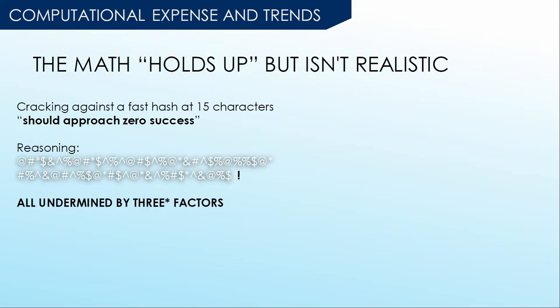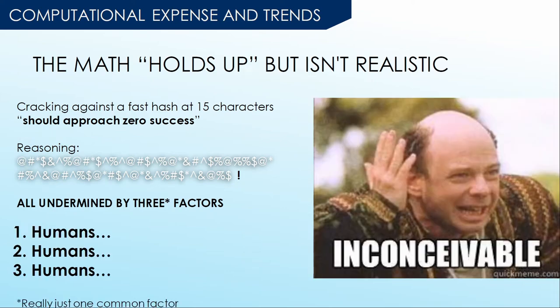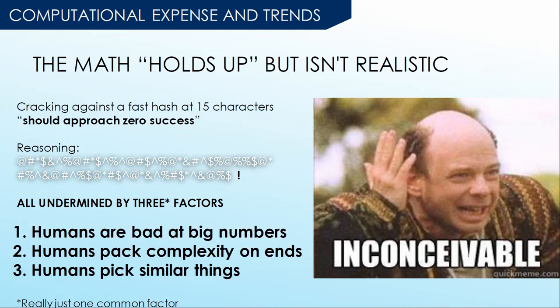Well, I'm here to tell you that all of these arguments — that say cracking past 15 characters is inconceivable — can be undermined, and with only three factors. The big secret weakness is humans. Specifically: humans are bad at big numbers, humans pack complexity on the ends of passwords or passphrases, and humans pick similar things. Common things are common because they're commonly picked.